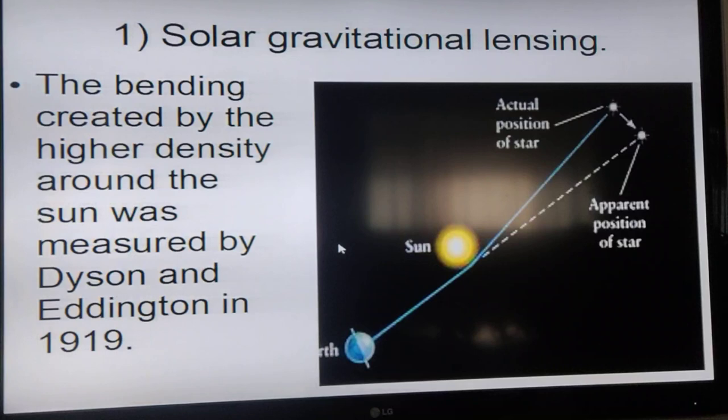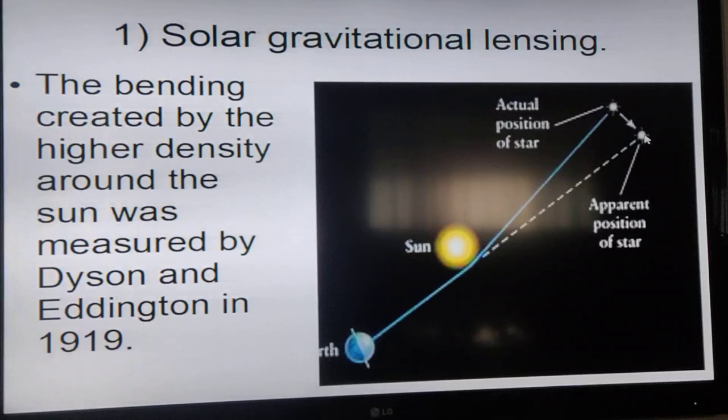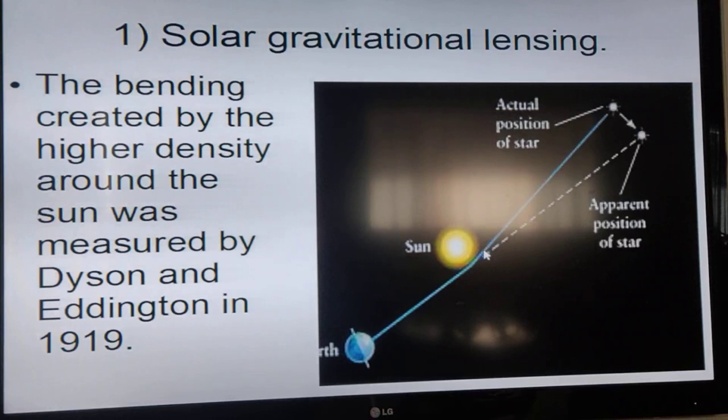This was noticed way back in 1919 and was measured by Dyson and Eddington during World War I. There was an eclipse where the moon came between the sun and earth. They were able to measure where a star appeared to be and then determined where it was supposed to have been. Light traveling a straight line approaches the sun where the density is higher, bends, and hits the earth. So we see it as coming from a different location.